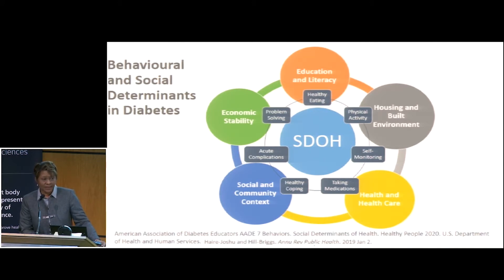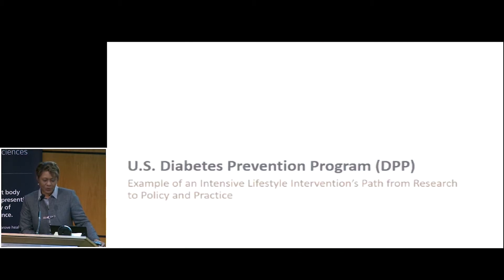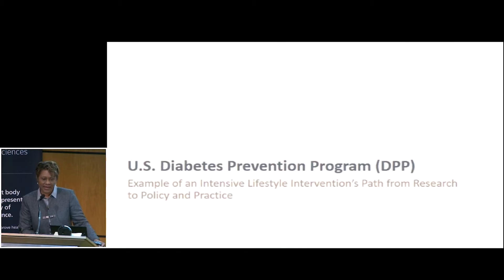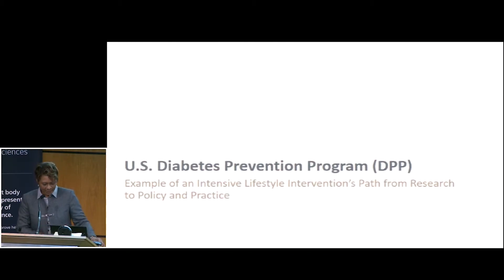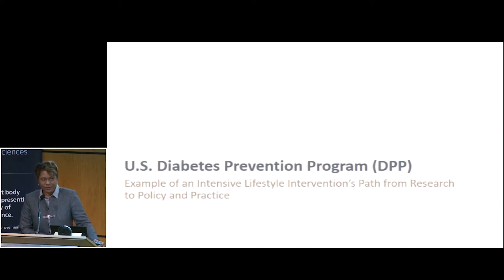During the panel discussion, I'm happy to talk more specifically about the social determinants and particular types of interventions on those determinants. Today I'll be sharing an example of a pathway that ended up being successful from research to policy and practice for an intensive lifestyle change program — the U.S. Diabetes Prevention Program.